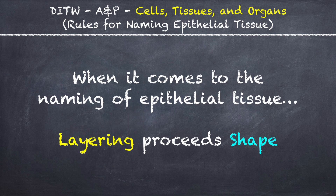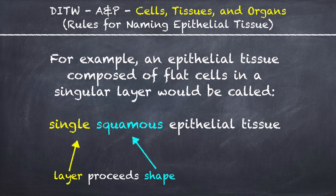When it comes to naming of epithelial tissue, layering precedes shape. For example, an epithelial tissue composed of flat cells in a singular layer would be called simple squamous epithelial tissue.